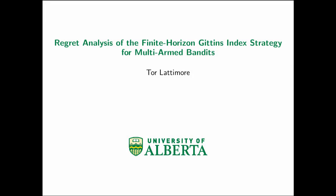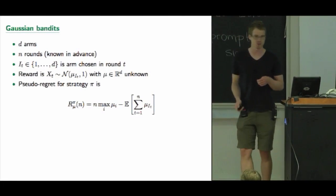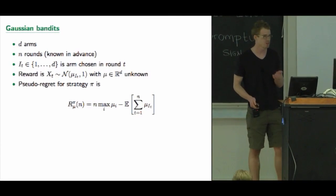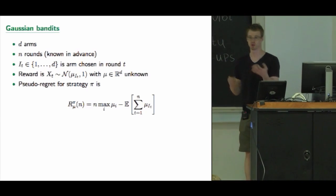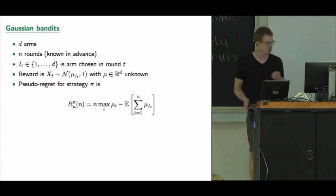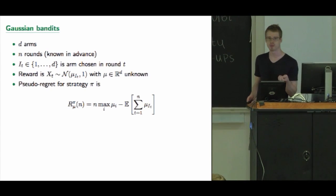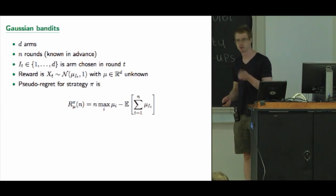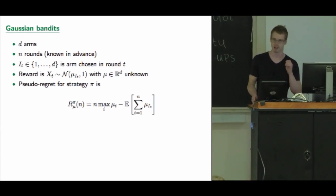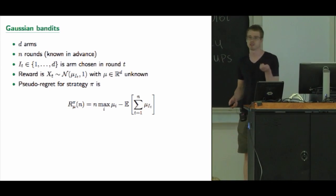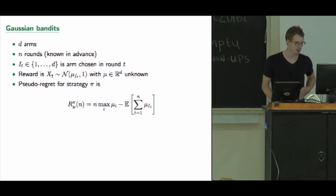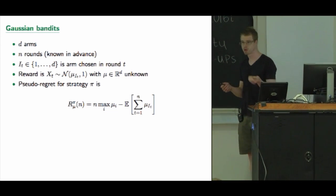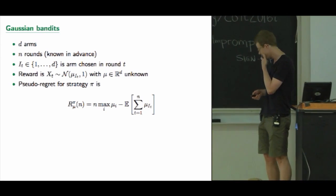I'm going to talk about bandits, and a really, really simple setup. So this is the simplest thing you could imagine: a K-armed bandit problem. Of course, we all use different notations. There are N rounds, which we know in advance, and we have the action that you choose in round T. We would like to make the regret small, which is the expected pseudo-regret.